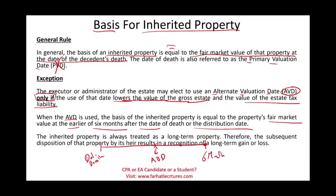Inherited property is always treated as long-term property, so you don't have to worry whether it's short-term or long-term like gifted property. The reason is logical: with gifted property, you can plan when to give the gift, but you cannot plan when you die. Therefore, it is always treated as long-term property, and the subsequent disposition of that property by the heir results in recognition of a long-term gain or loss.